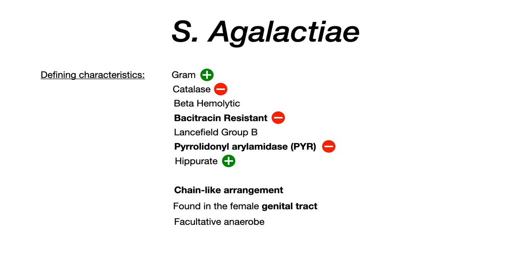Strep agalactiae is PYR negative, and something new which we haven't seen before is that it's hippurate positive. The three things that differentiate strep agalactiae from strep pyogenes — which is where the test writer is going to go because they share so many other common features — are: agalactiae is bacitracin resistant, PYR negative, and hippurate positive.